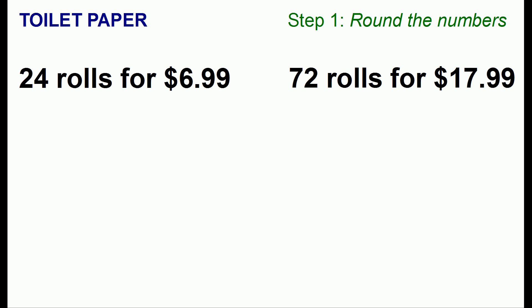Let's say you're buying toilet paper and one package has 24 rolls for $6.99 and another package has 72 rolls for $17.99. Which option is cheaper? I'm going to explain a method so that you can figure this out in your head very quickly. The first step is you should round the numbers to the nearest dollar because that'll be good enough for our estimation purposes.